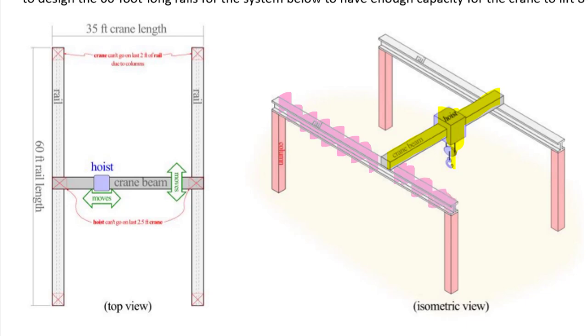What they need you to do is design these rails. The rails are going to be made out of wide flange sections, also commonly known as I-beams. They're 60 feet long. There are some limitations: the crane can't quite reach the end of the rails because of the columns, and the hoist can't quite reach the end of the crane beam. These physical limitations are all spelled out in the document.